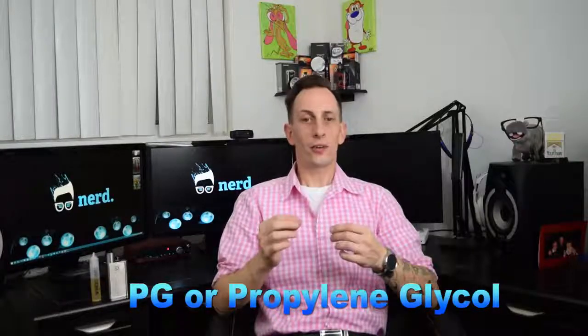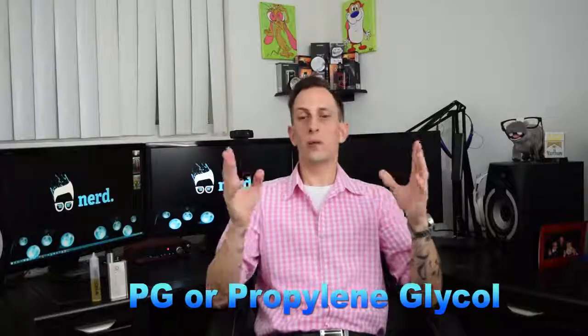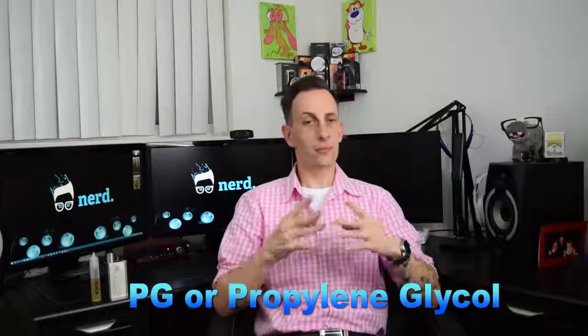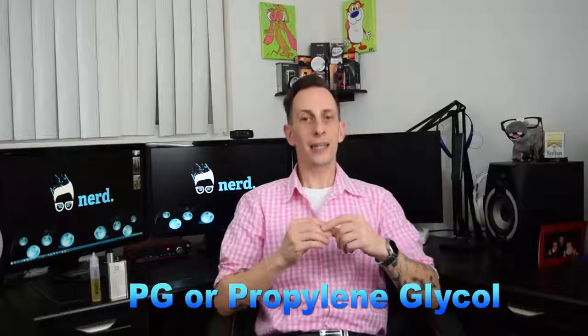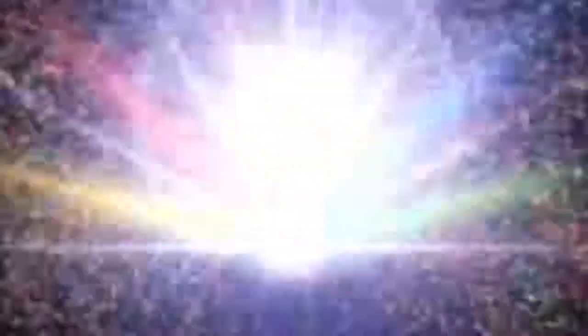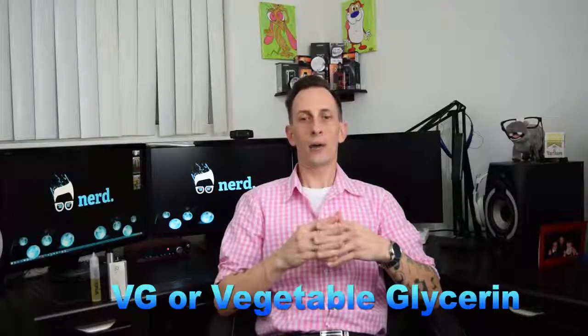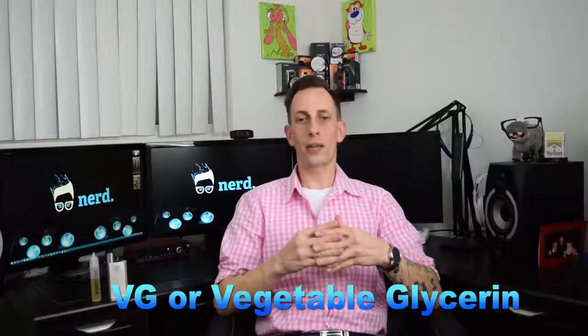PG is found in antifreeze which makes people think that it must be bad. Water is also found in antifreeze and water is clearly not bad. Well PG isn't bad either, and it's actually a common ingredient in asthma inhalers. Now vegetable glycerin is another organic compound that's actually used in food products and has a naturally sweet taste to it. The flavorings are food grade flavors and are deemed safe to ingest by the FDA. Nicotine in e-liquid is almost 100% pure and is extracted from tobacco leaves in an FDA-approved laboratory.